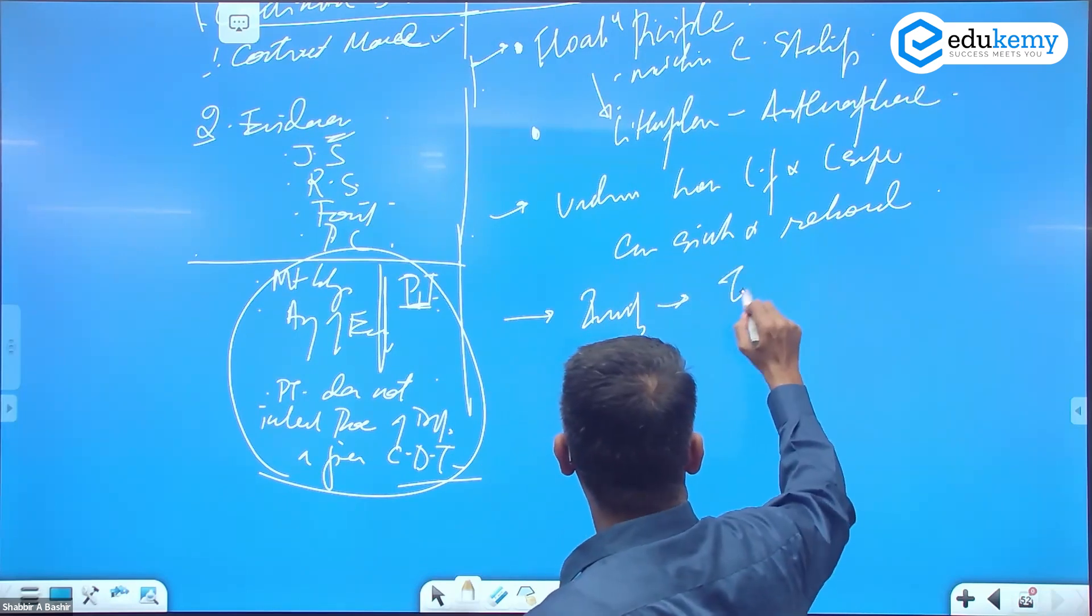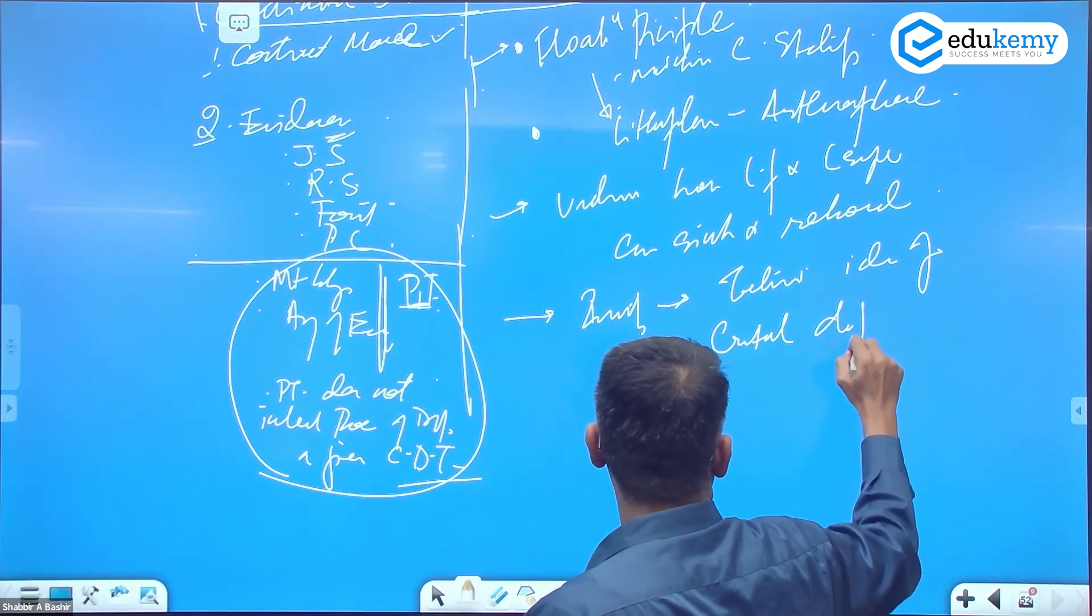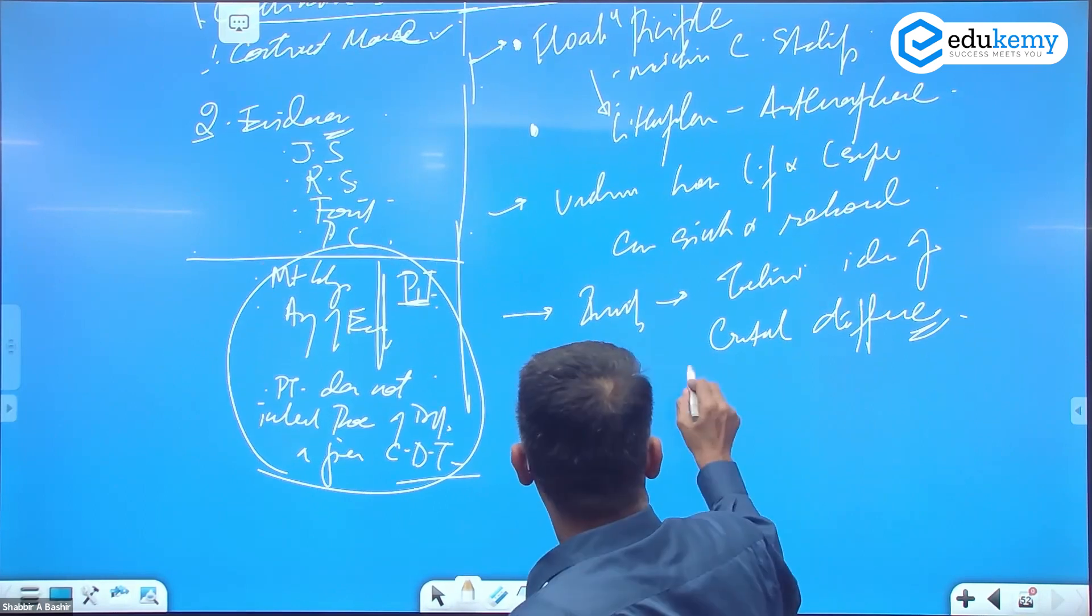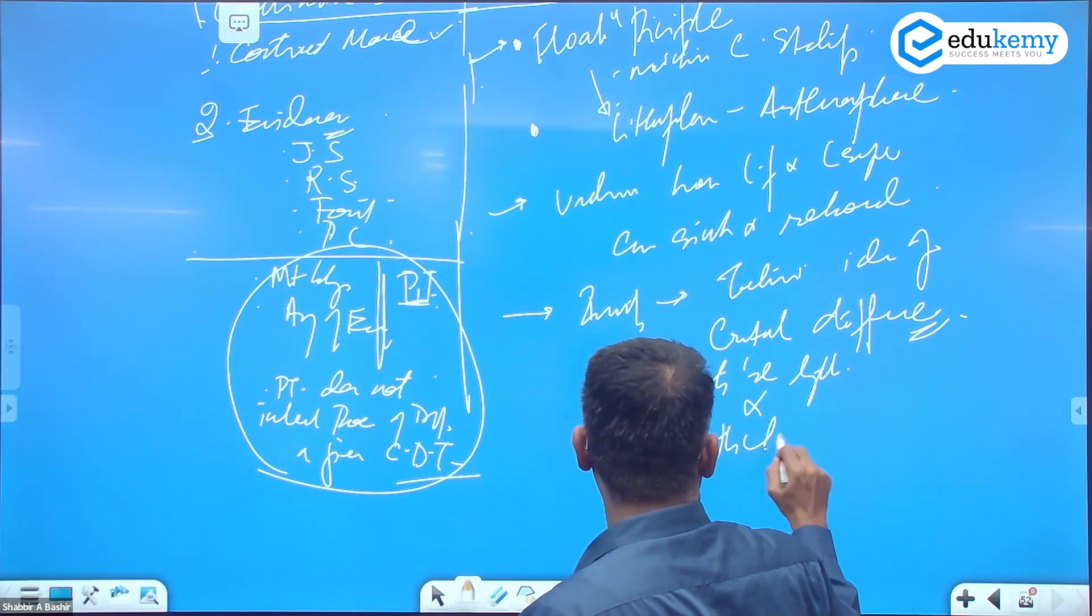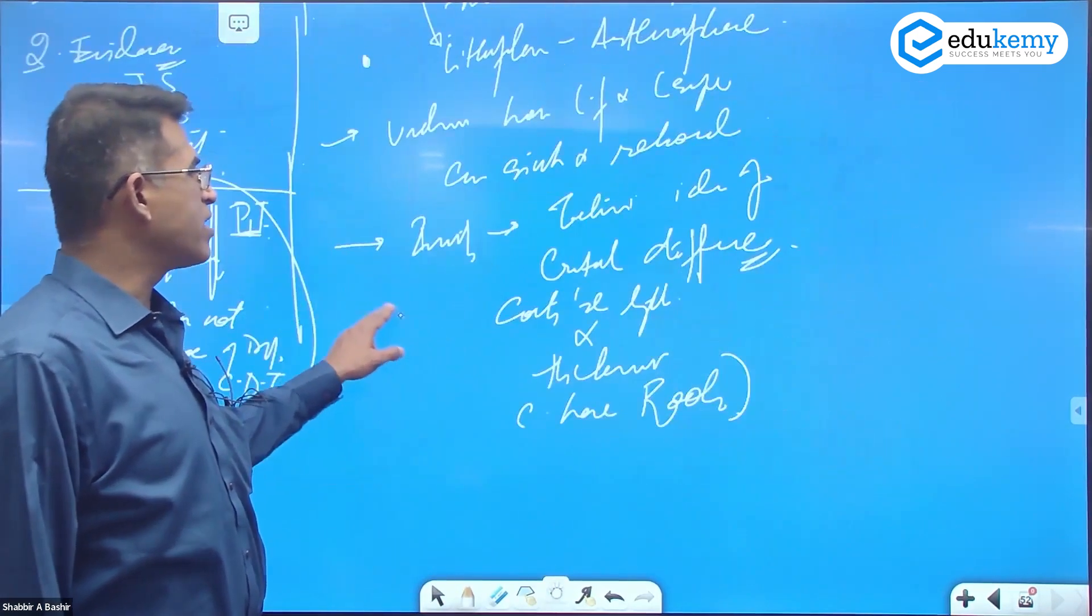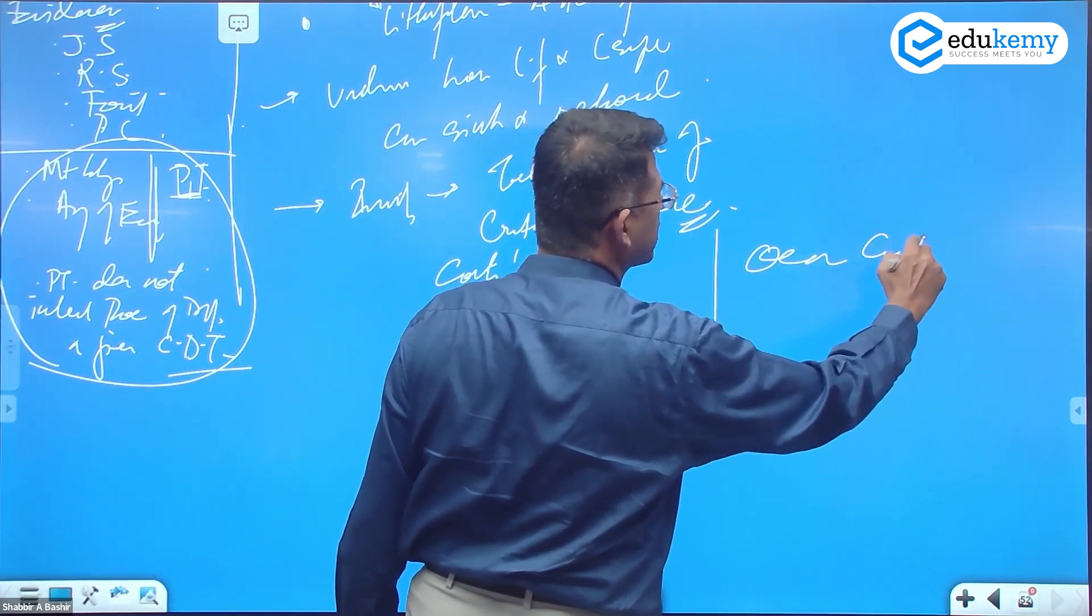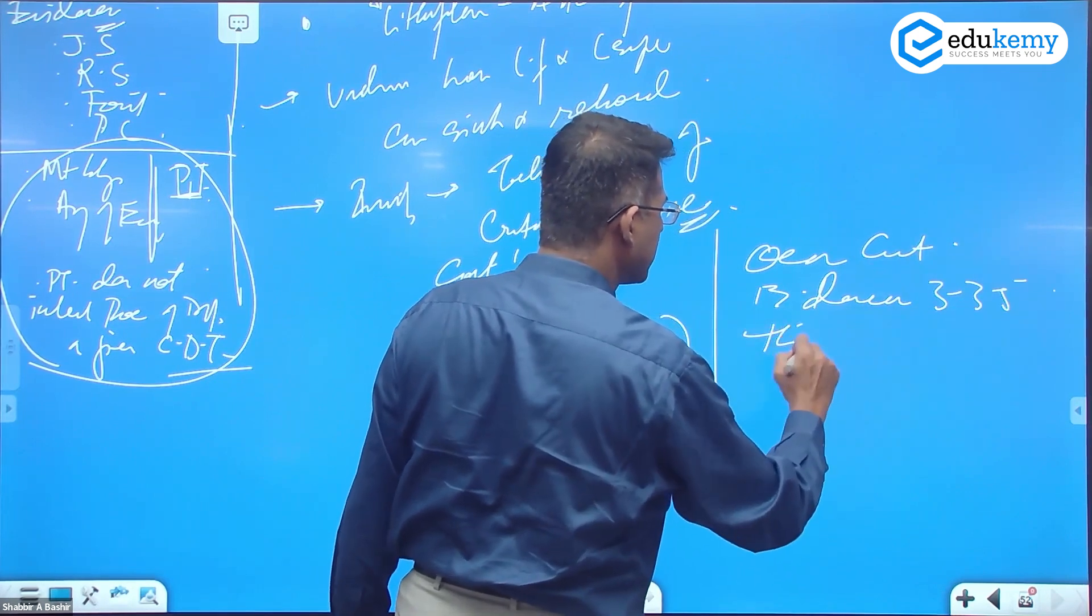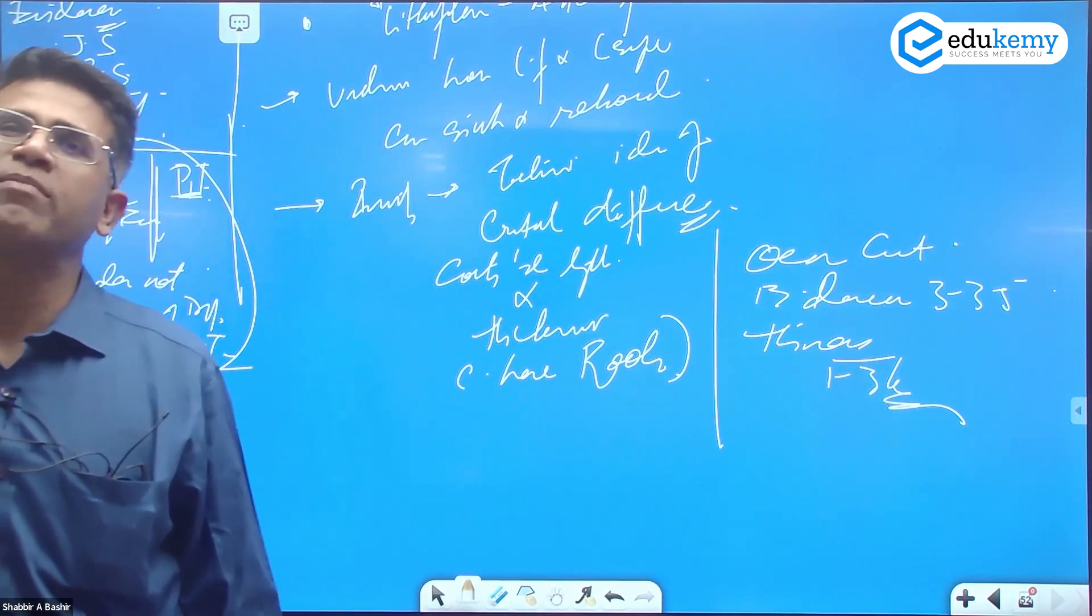Isostasy explains the tectonics idea of the crustal differences. What difference? Continents are lighter and they are thicker. Continents have roots. Continents are lighter and continents are thicker and continents have roots. And the ocean crust is denser - 3 to 3.5. It is thinner, about 1 to 3 kilometers thick. This is isostatic balance.